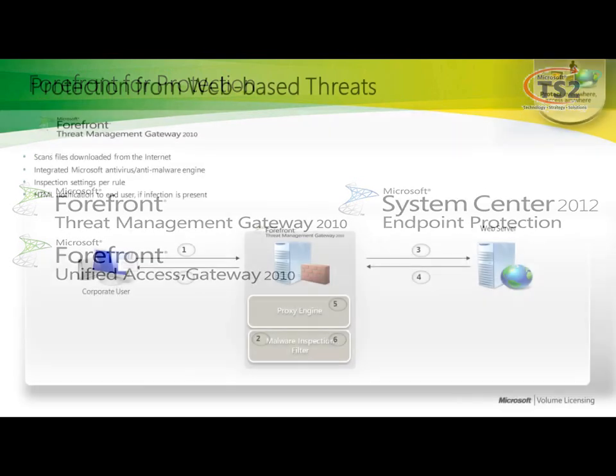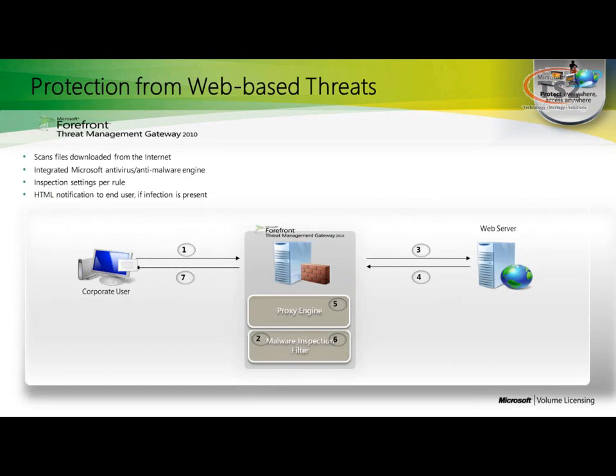Starting with Forefront Threat Management Gateway, we're talking about the firewall for your network. It gives our corporate users the ability to gain access to the internet through our proxy engine and experience a malware inspection filter on inbound content coming back from the internet. This way we can protect our users in that defense in-depth process, putting protection on their desktop and protection at the firewall — not only to prevent malicious people from coming in, but prevent users from accidentally bringing malicious software into your environment. We can set these inspection rules very granularly per group of people, omit a group of people, or restrict specific URLs for the whole organization or a specific portion of it.